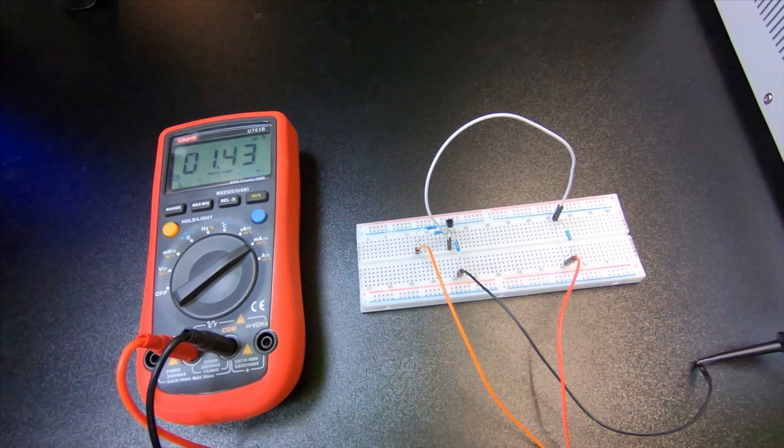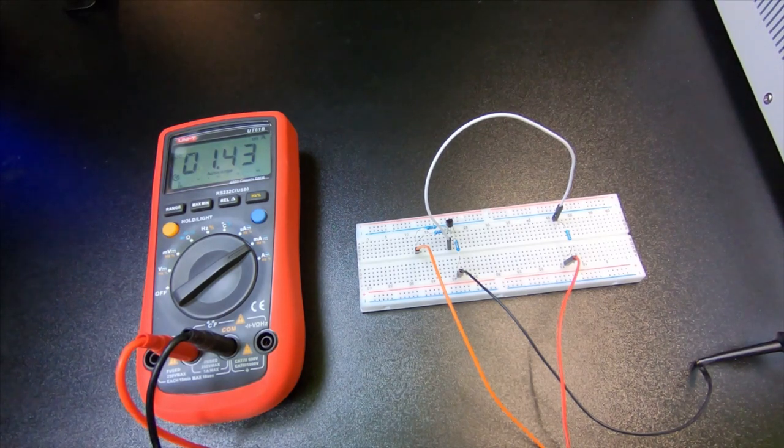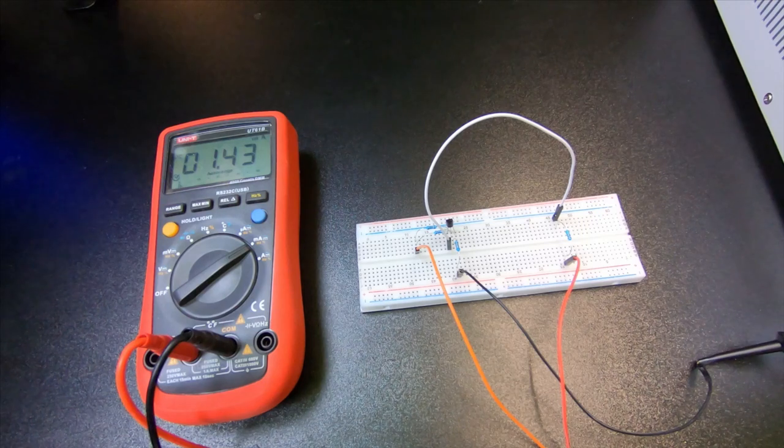So those are the two most simplest circuits to use if you want constant current sources.